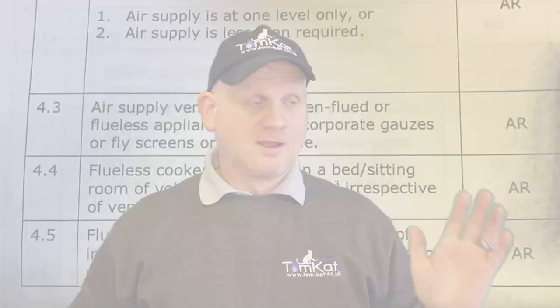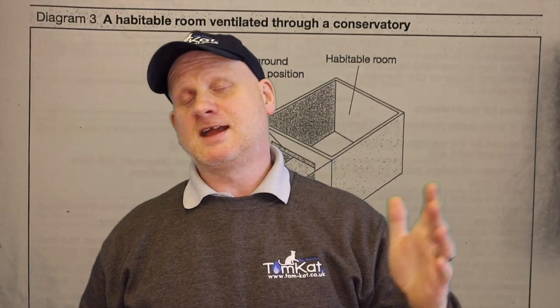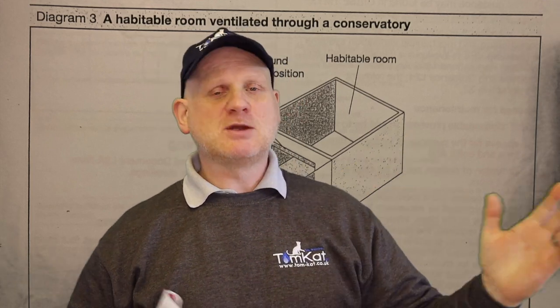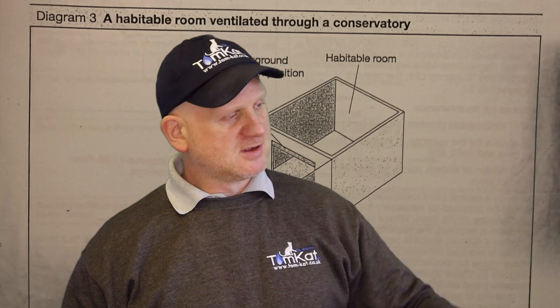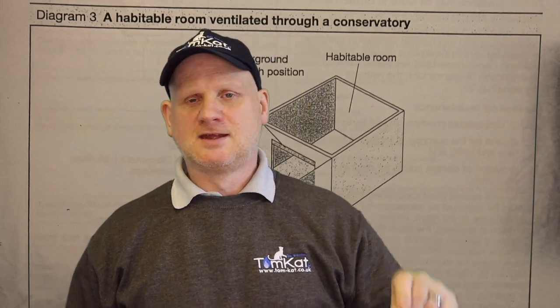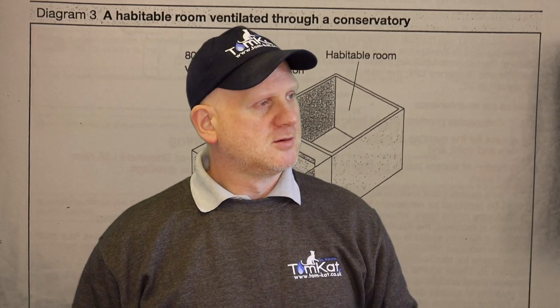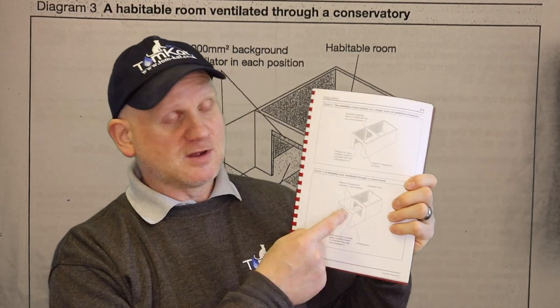Finally, let's look at the main scenario: the kitchen is bigger than 10 metres cubed, there's a nice big cooker installed, we've got an openable window and a door — but when we look, both the door and the window open out into a conservatory. Let's see what the Building Regs say about that.